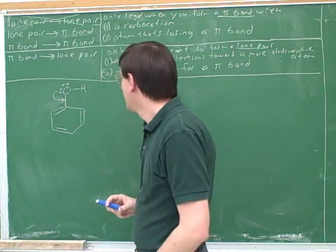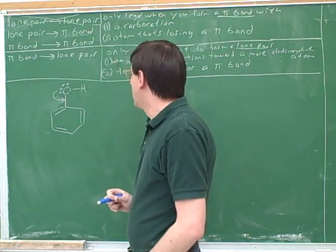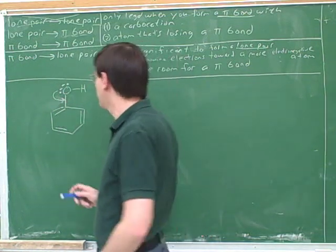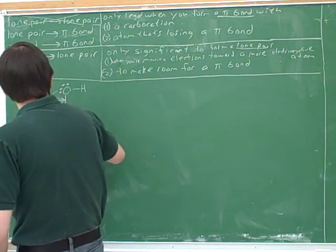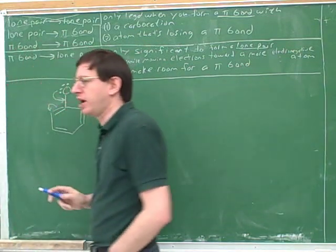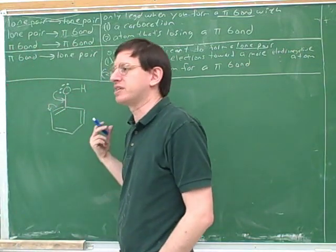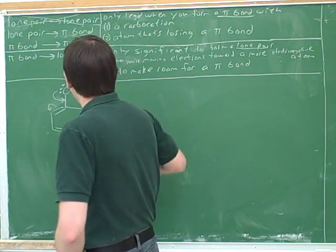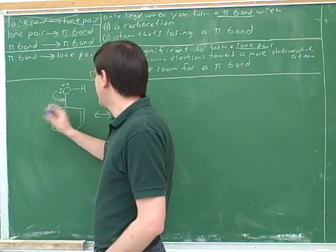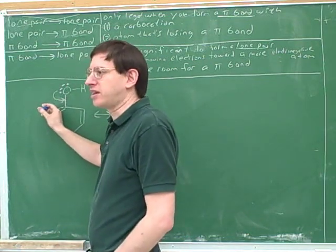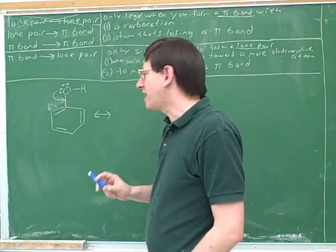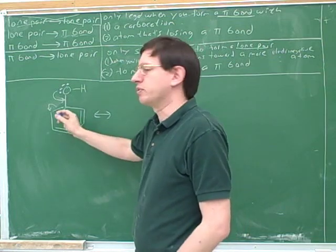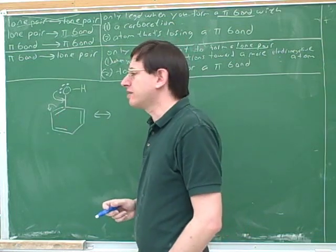That's right — we can do this. We've got to make room, and let's make room in the smallest possible step so we're not missing any resonance structures. This is a legal arrow and this is a significant arrow. Now the next step is to draw the resonance structure that we get from these arrows.